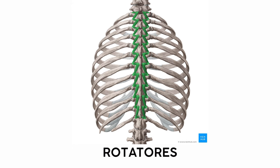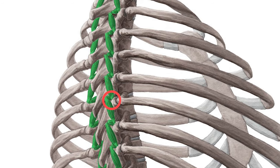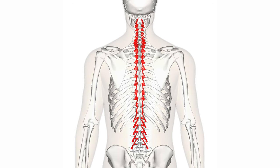Even deeper than the multifidi are the rotator muscles. They connect the transverse process of one vertebra to the lamina and spinous process of the vertebra above it. These muscles are so small and deep that they stabilize the spine more than they rotate it, but because they're so horizontal compared to the other long erector muscles, I can always remember that these should be my rotator muscles, as the name implies.